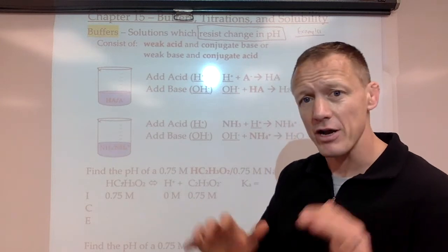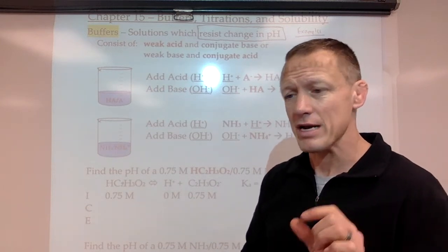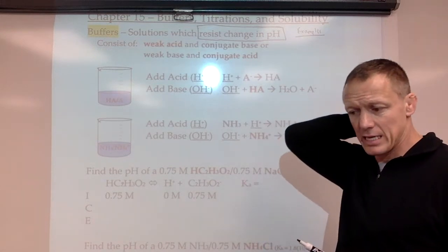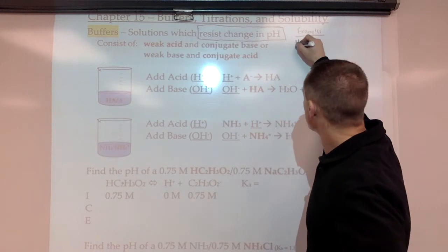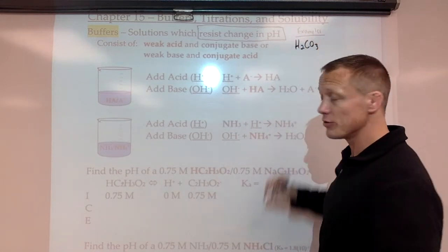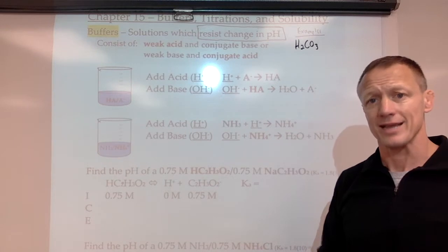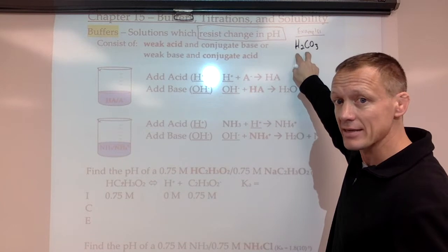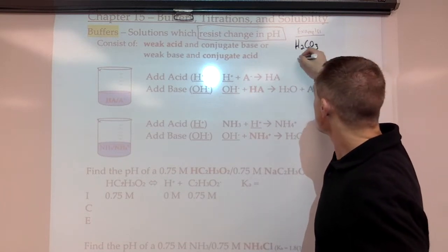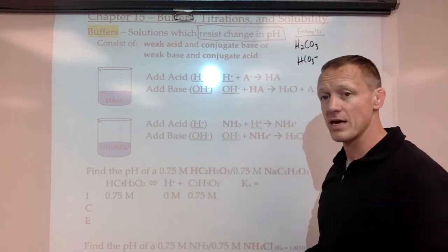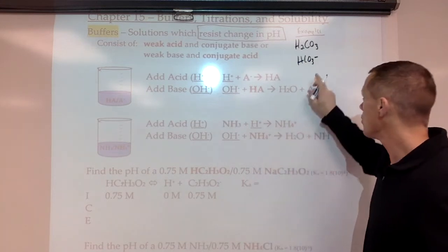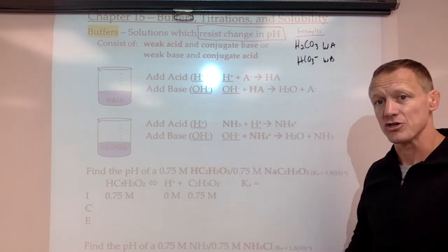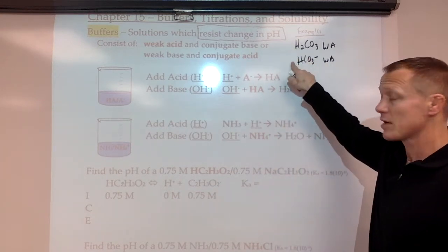Your blood has a buffer in it — it keeps the pH of blood in a pretty narrow range. The two substances in blood that make up the buffer system are H2CO3, which is carbonic acid. It has a Ka value; only a small percent of these molecules dissociate — it is a weak acid. And HCO3 negative, the bicarbonate ion, which would be a weak base. So buffers have a weak acid and their conjugate base.